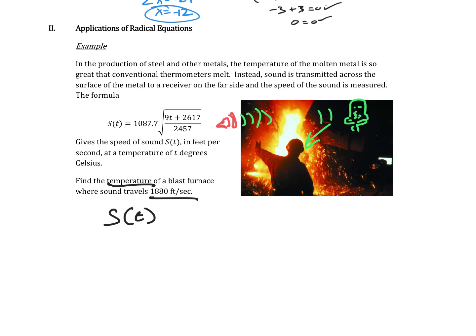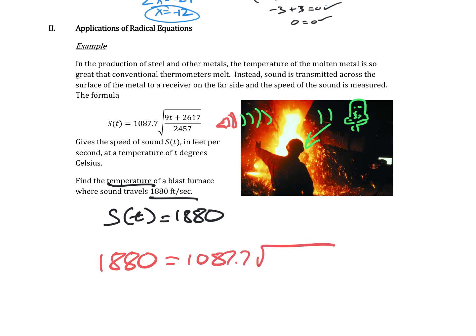We want to find the temperature of a blast furnace where sound travels at 1,880 feet per second. So s(t) equals 1880 — note this is function notation, not s times t. Substituting: 1880 equals 1087.7 times the square root of the quantity 9t plus 2617, all over 2457. We need to do some algebra to solve for t.